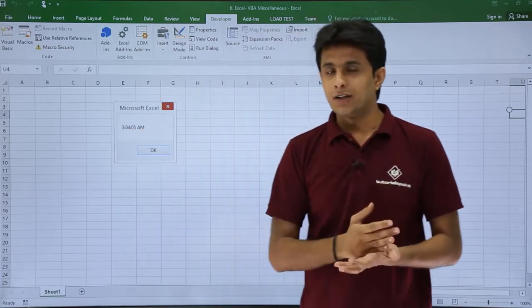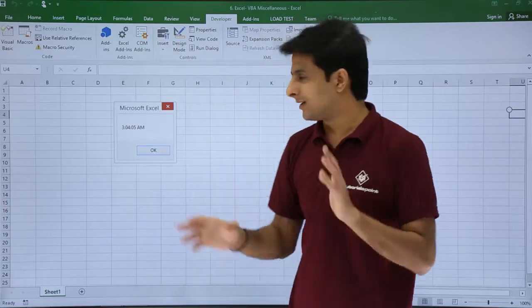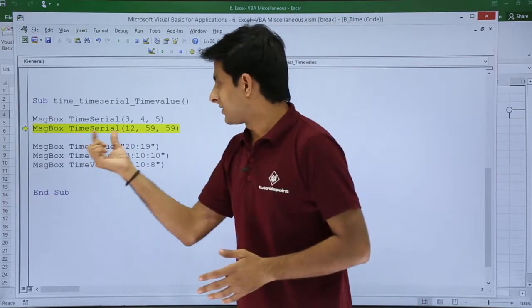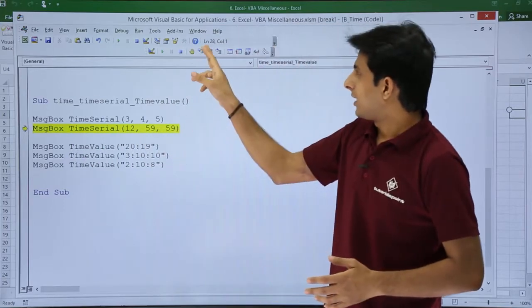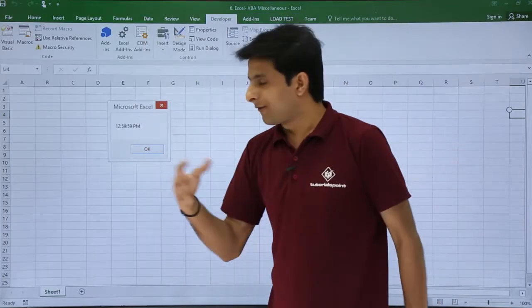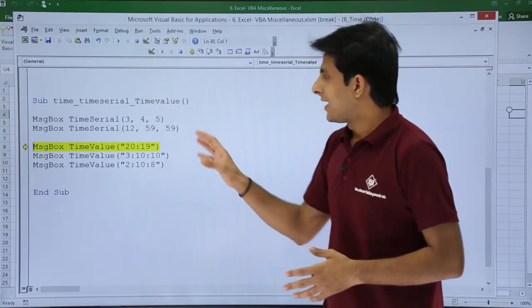3 hours 4 minutes and 5 seconds, it is AM. I'll click OK. Same way if I say TimeSerial(12, 59, 59), if I click on Step Into, it says 12:59:59 which is given as PM itself. I'll click OK.